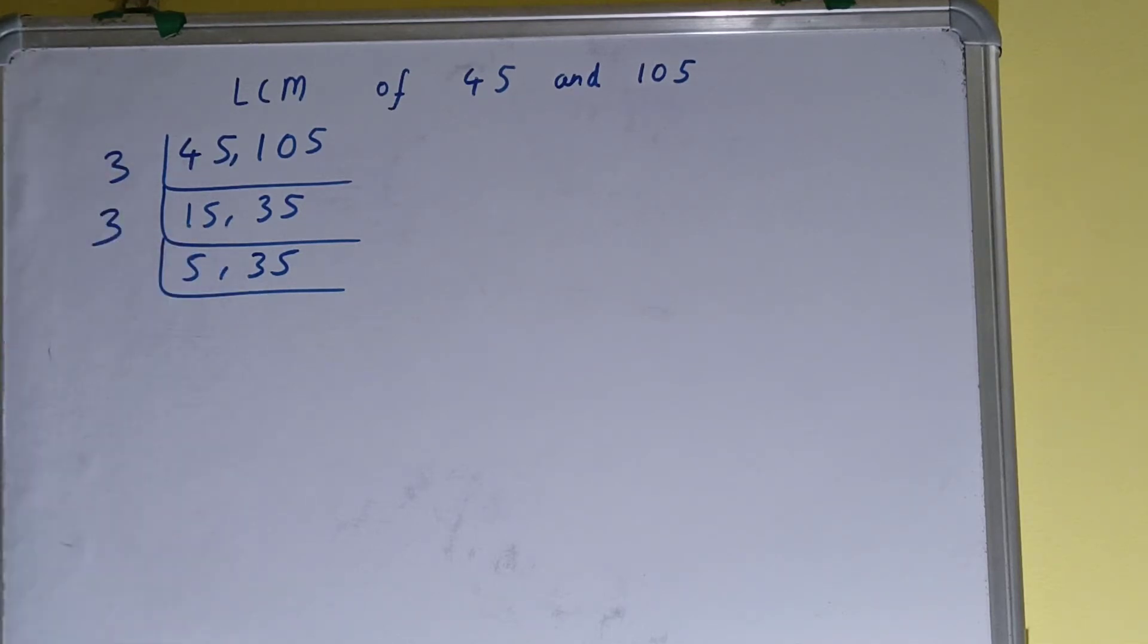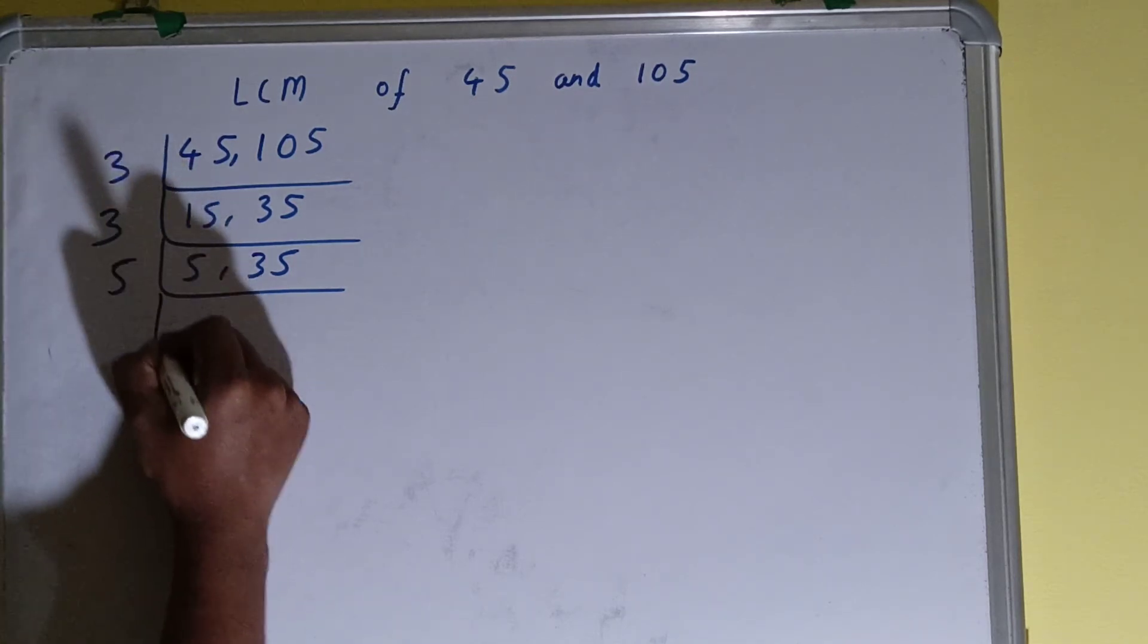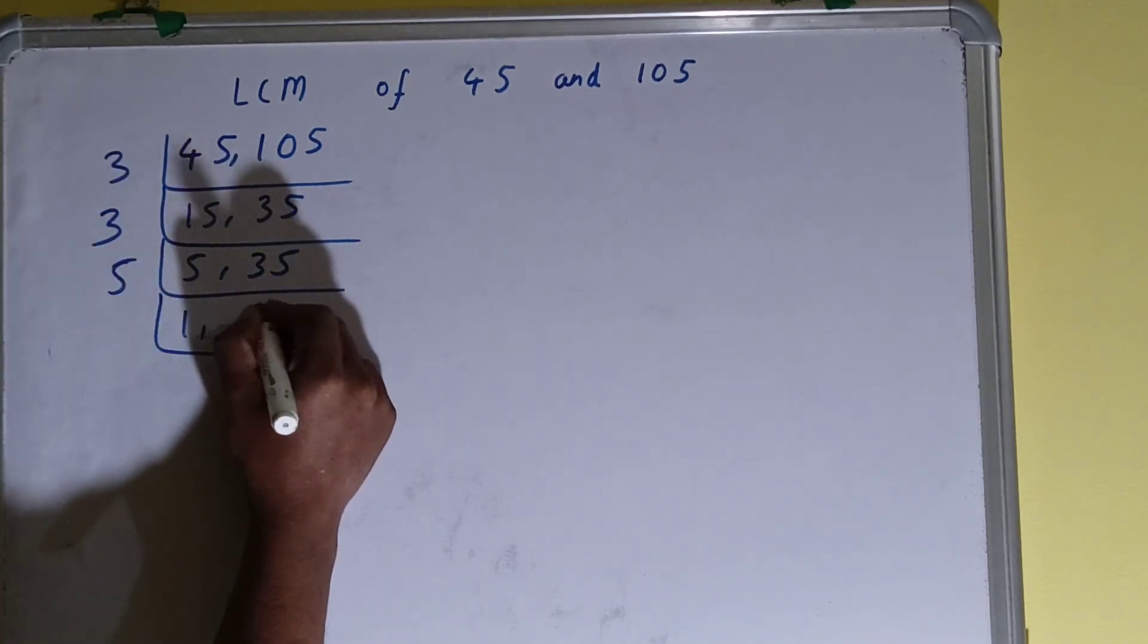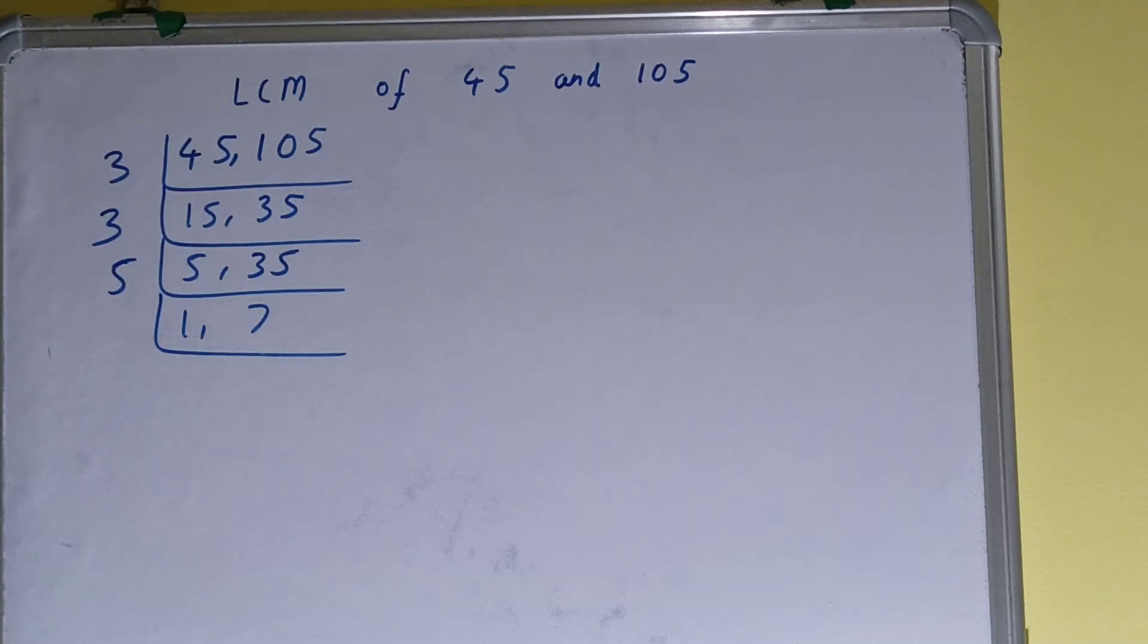So we'll divide and we'll be left with 1, 7. Now again, if we check, is any of the numbers divisible by 5? Then none of the numbers. So we'll go to the next lowest prime number, that is 7.